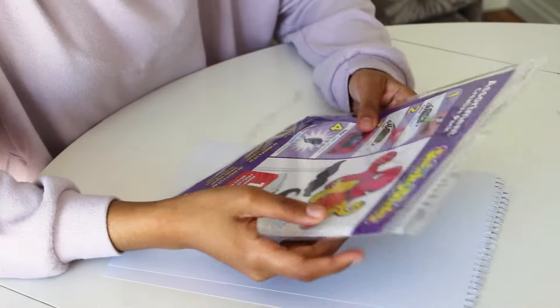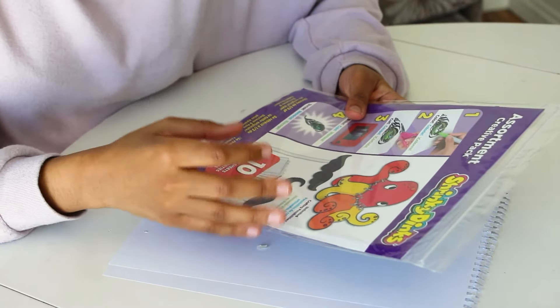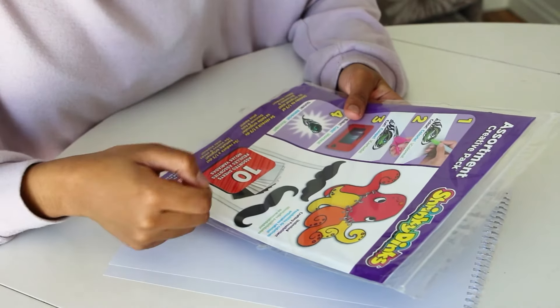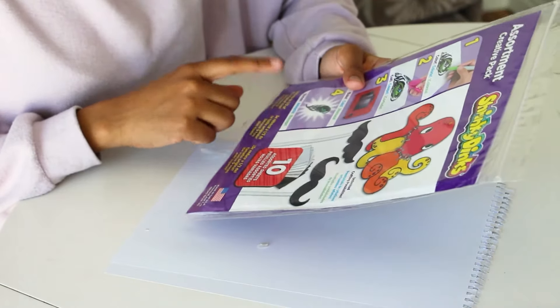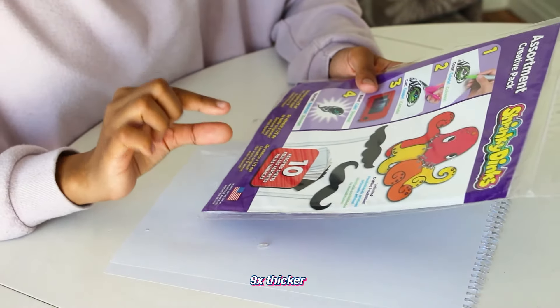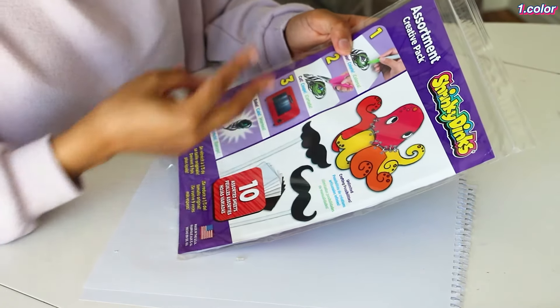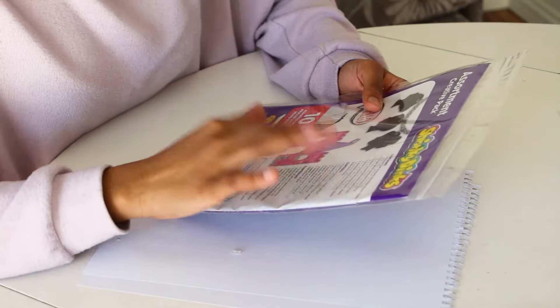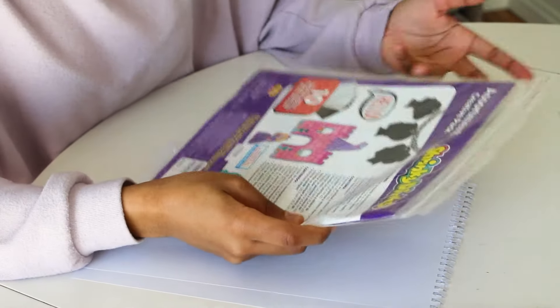Okay, so I'm going to read the instructions for shrink plastic. I know from watching videos on YouTube that you have to actually draw the object that you want bigger than the size because it shrinks. It says here that it shrinks to a third of its original size and becomes nine times thicker. The first step is to color, second step is to cut, third step is to bake, and the fourth step is to shrink.